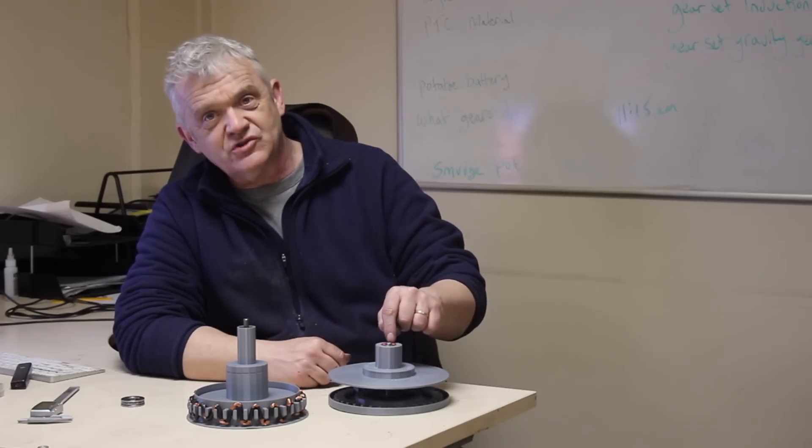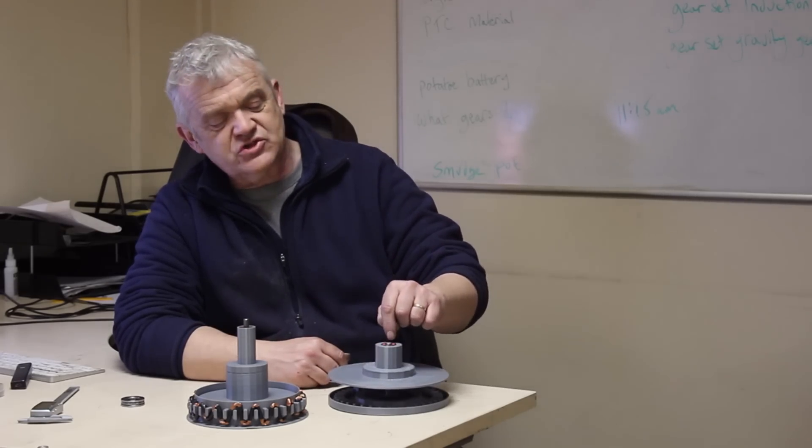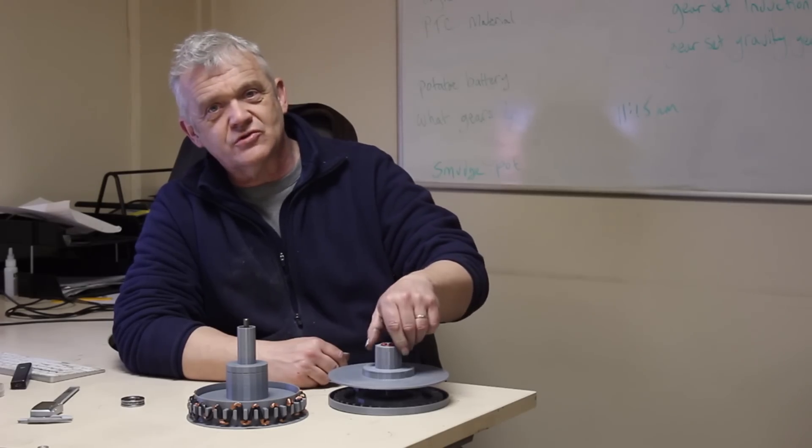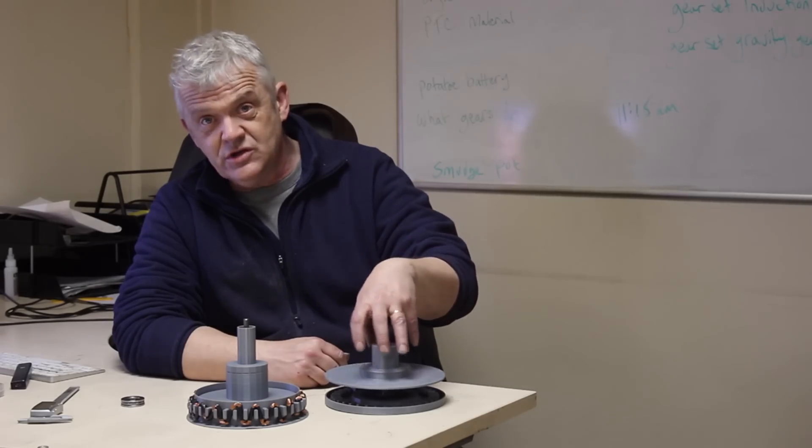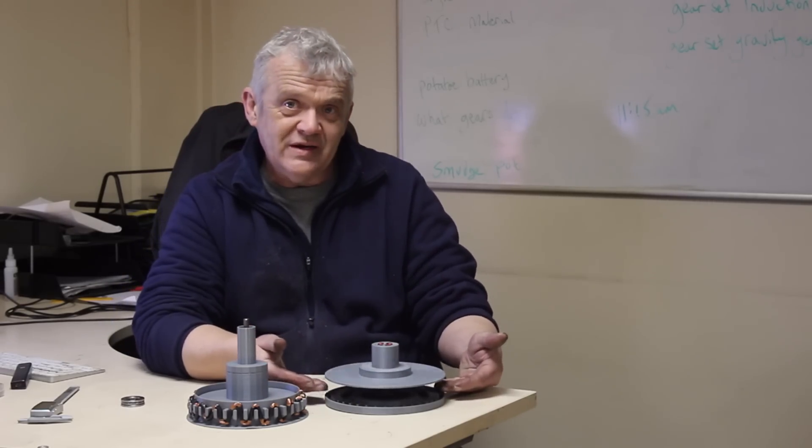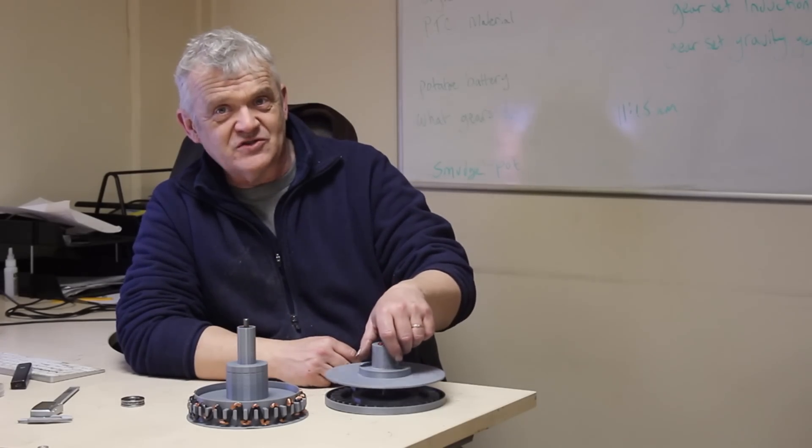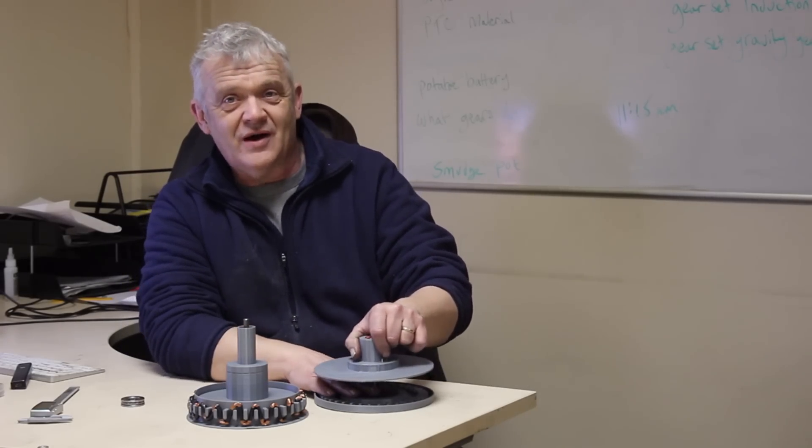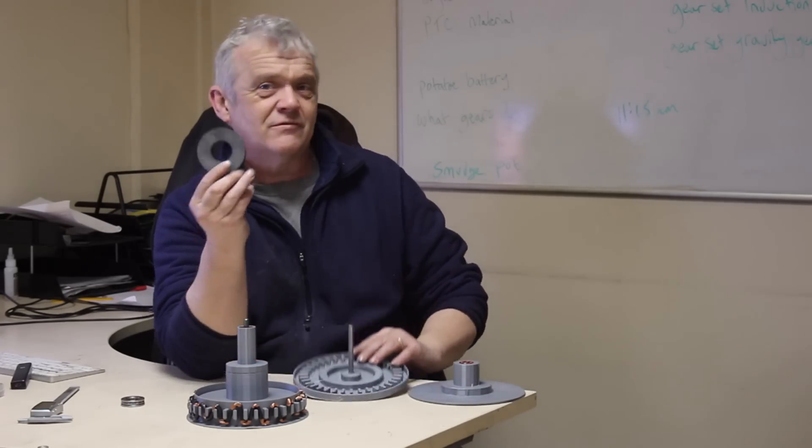That's why we have bearings in here - because this also experiences a sideways force but it's stopped by the bearings. Those are ceramic bearings, so we do have some friction in the bearings here to overcome Earnshaw's theorem, but no friction in the bit here apart from the air friction that it's passing through. And that's passive bearings - they're stunningly simple to make, basically just two ring magnets restrained.